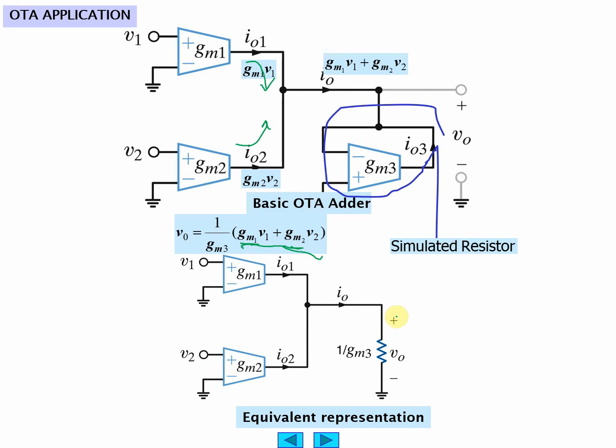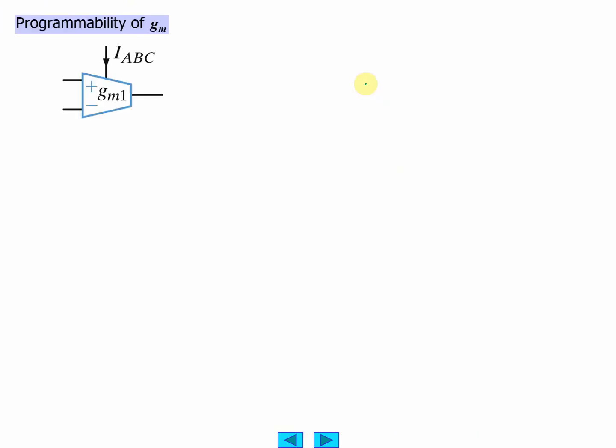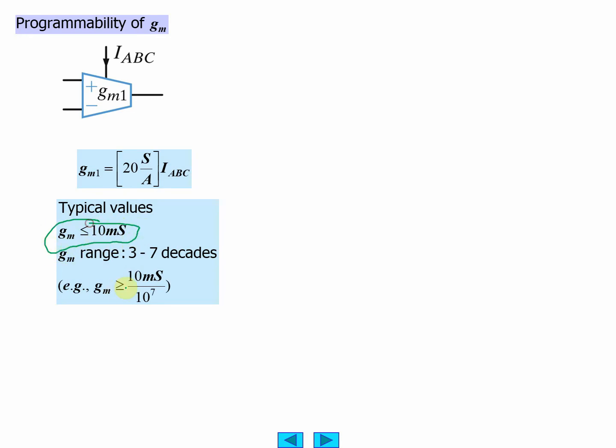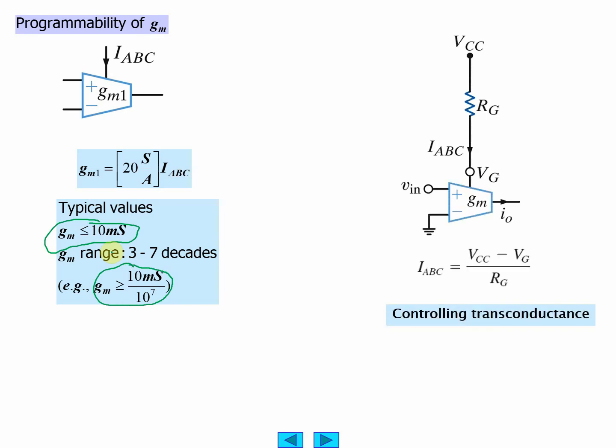The equivalent, so this is the equivalent resistance that replaces this circuit here. We'll find out later GM is programmable. GM has to be less than some upper boundary and has to be greater than some lower boundary or it won't work, and this is a typical value.